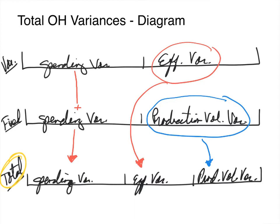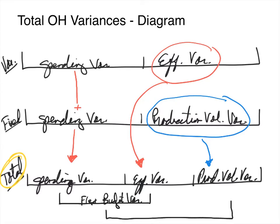We can also have an overall flexible budget variance by summing the overall spending and efficiency variances. We can also have a total overhead variance by summing all three — spending variance, efficiency variance, and production volume variance. Or we could take the flexible budget variance total and sum it with the production volume variance to get the total overhead variance.